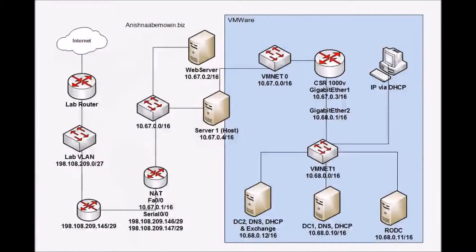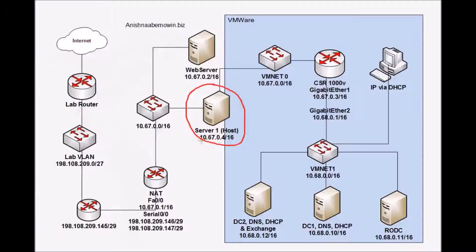Here is a Visio drawing of my network infrastructure. I have a domain with a domain name of Anishina Bmon.biz. This network consists of two physical machines. One is at the address 10.67.0.4. This particular machine hosts a virtual network of 10.67.0.4, which is partially a virtual network and also partially a physical network.